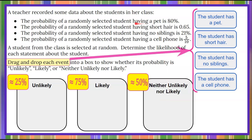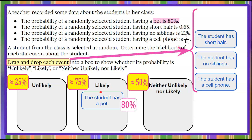Let's consider the first one: the probability of a randomly selected student having a pet is 80 percent. When we talk about a student having a pet at 80 percent, we need to drag and drop this to one of these categories. 80 percent is closest to 75 percent, so we're going to move 'the student has a pet' to being a likely outcome.